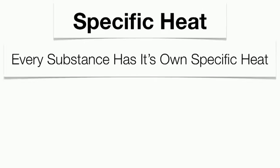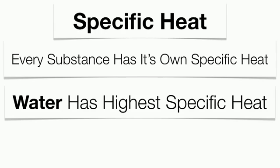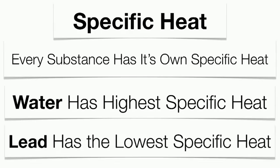Every single substance on the planet has its own specific heat — every substance heats and cools at its own rate. Something that has a very high specific heat is water. Something that has a very low specific heat is lead. Those two substances are going to be the two extremes on your reference table page one, specific heat of common materials. Make sure you check out my podcast on that page as well.